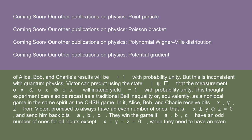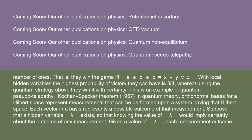But this is inconsistent with quantum physics. Victor can predict using state ψ that the measurement σx⊗σx⊗σx will instead yield minus one with probability unity. This thought experiment can also be recast as a Bell inequality, or equivalently as a non-local game in the same spirit as the CHSH game. Alice, Bob, and Charlie receive bits x, y, z from Victor, promised to always have an even number of ones (x⊕y⊕z = 0), and send back bits a, b, c. They win if a, b, c have an odd number of ones for all inputs except x = y = z = 0, when they need an even number — i.e., they win iff a⊕b⊕c = x∨y∨z. With local hidden variables, the highest probability of victory is 3/4, whereas using the quantum strategy they win with certainty. This is an example of quantum pseudotelepathy.